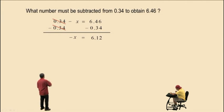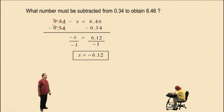Now notice, we have negative x, or negative 1 times x equals 6.12. Since it's negative 1 times x, we need to divide out that negative 1 to get the 1x by itself. So we divide both sides by negative 1. Negative divided by negative is positive, and so we get x on the left-hand side, and the right-hand side is negative 6.12. So negative 6.12 must be subtracted from 0.34 to obtain 6.46.